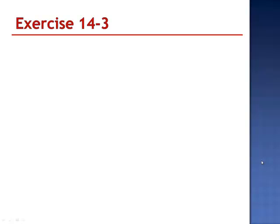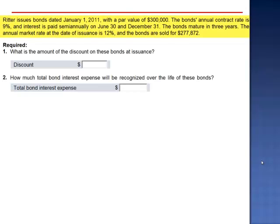Exercise 3. Ritter issues bonds dated January 1, 2011, with a par value of $300,000. The bond's annual contract rate is 9% and interest is paid semi-annually on June 30th and December 31st. The bonds mature in 3 years. The annual market rate at the date of issuance is 12% and the bonds are sold for $277,872.